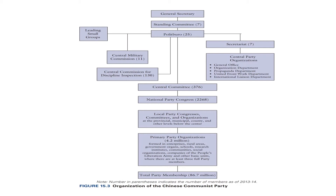The total party membership of 86.7 million people elects their immediate top, that is the primary party organization, following the bottom-up approach. These primary party organizations elect the local party congresses, which in turn elect the National Party Congress. The National Party Congress is the highest organ of the CCP in theory, but in practice the General Secretary is the supreme leader and exercises all the powers.